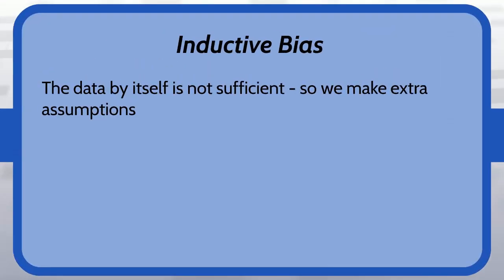However, with inductive bias we can get around this. So the data by itself is not sufficient so we make extra assumptions. The set of assumptions we make to have learning possible is called the inductive bias of the learning algorithm. One way we introduce inductive bias is when we assume a hypothesis class.